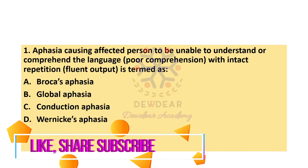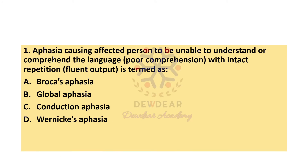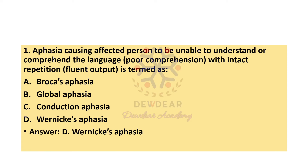Aphasia causing the affected person to be unable to understand or comprehend the language, with intact repetition, is termed as — options: Broca's aphasia, global aphasia, conduction aphasia, Wernicke's aphasia. The correct answer is option D, Wernicke's aphasia.